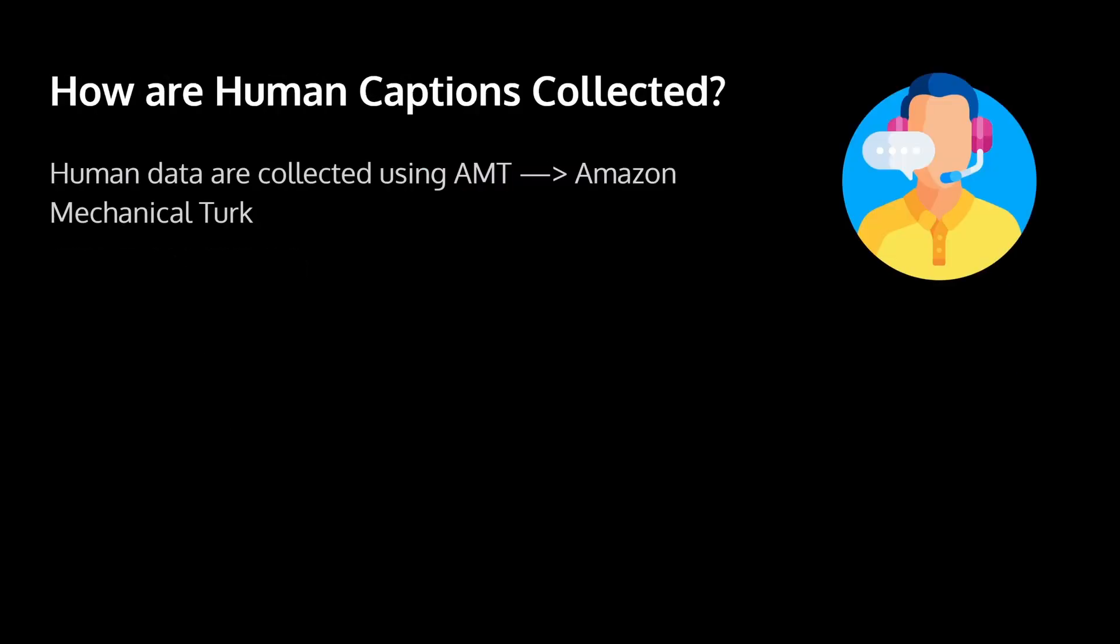Okay, so you might be wondering, how are they collecting the human captions? For each image description, there are a few human reference sentences. How are they collected? Well, they're collected through Amazon Mechanical Turk, which is a service for people where they can allow other people to fill in certain tasks, and they will pay them.